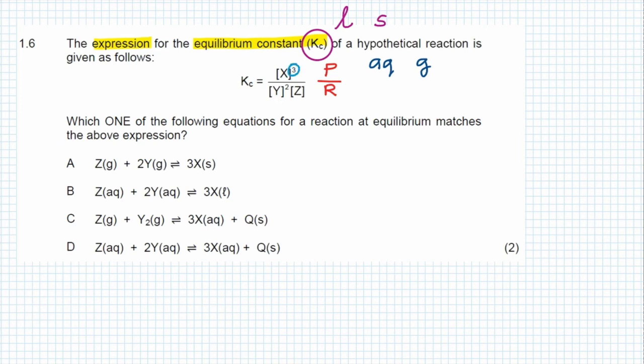Let's take a look at the options. If we look at option A, we see that X is a solid, so that means A is incorrect because we would not place a solid into the Kc expression. If we look at B, we see that X is a liquid, so B is incorrect because we do not include liquids in the Kc expression.